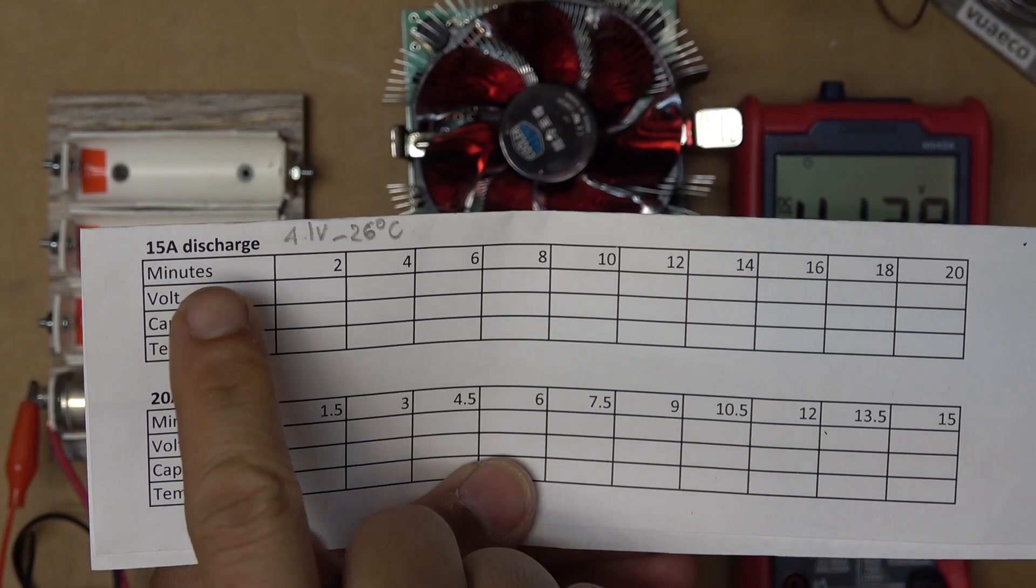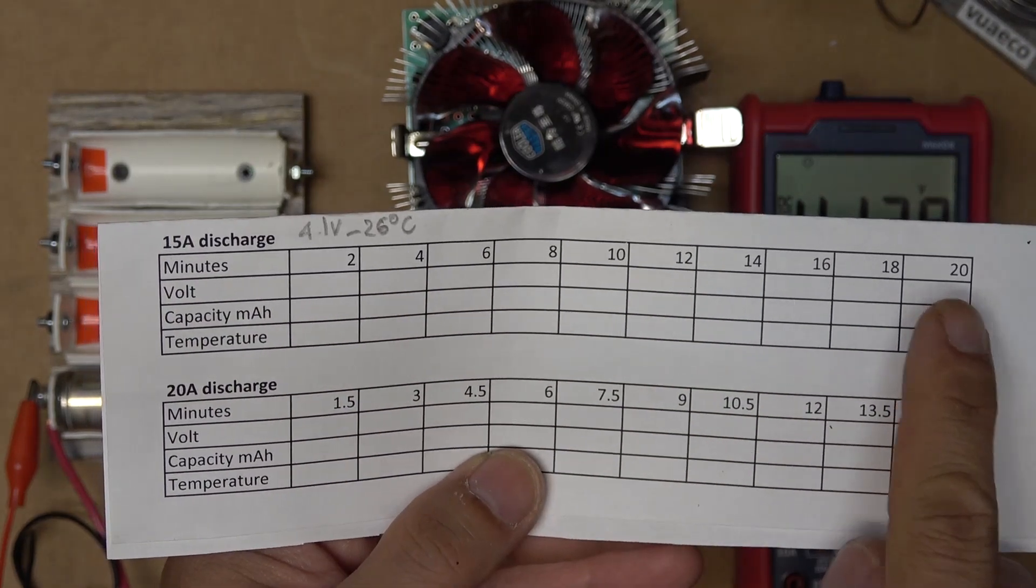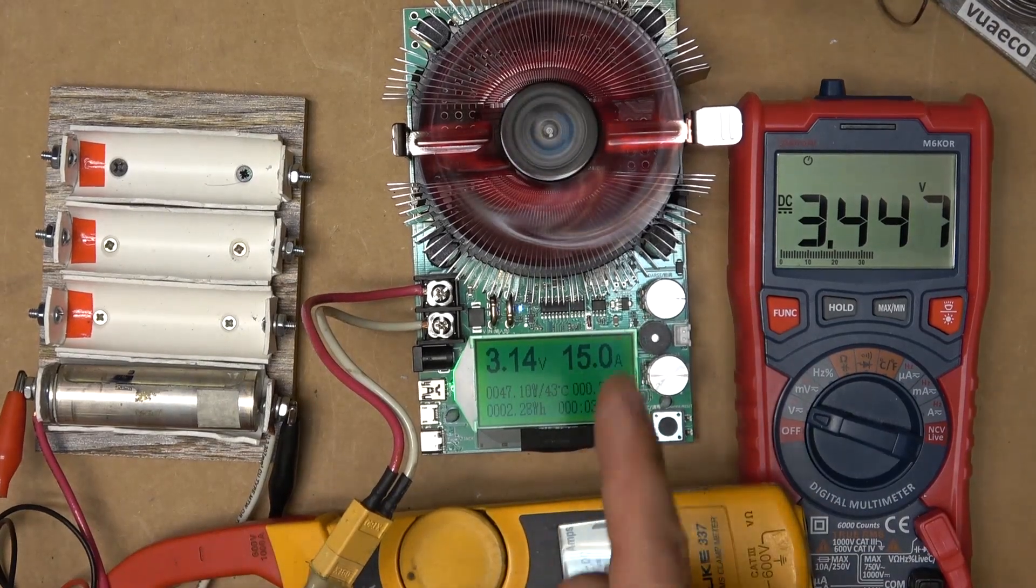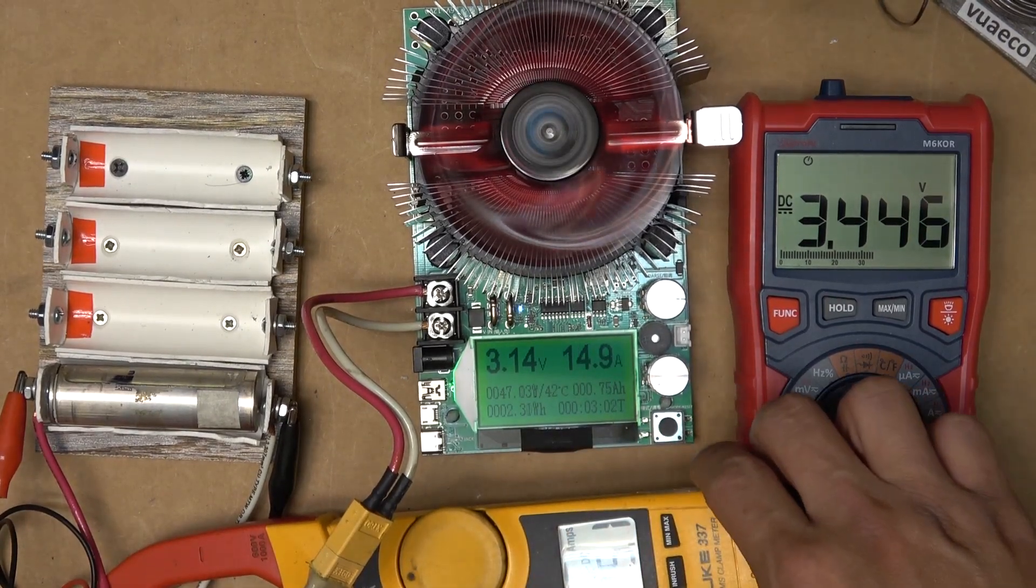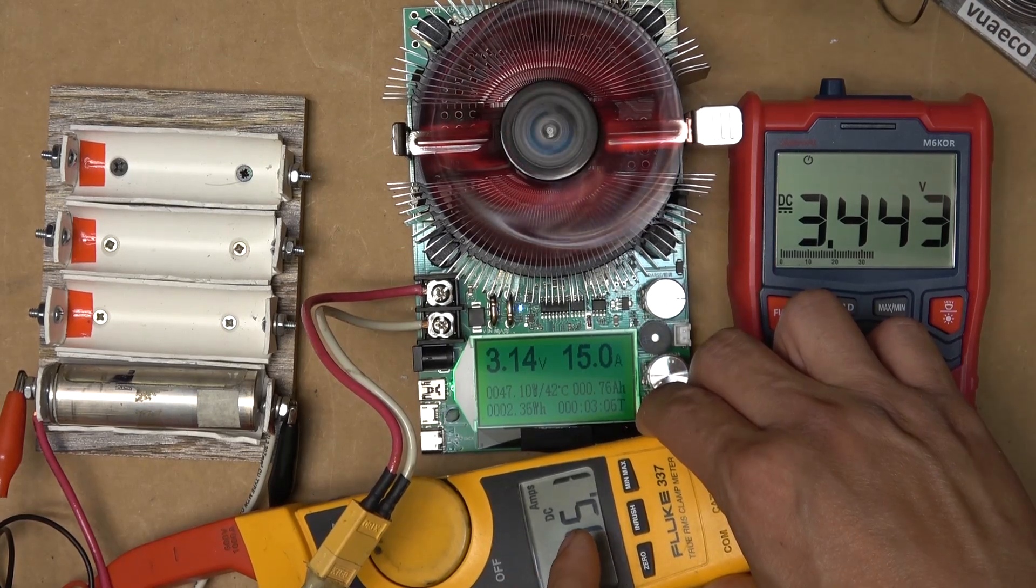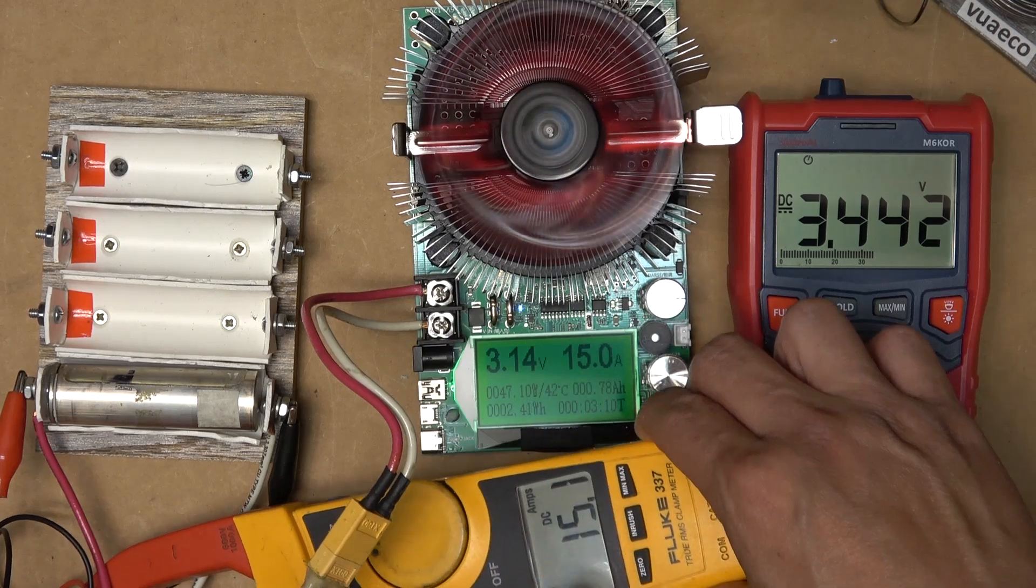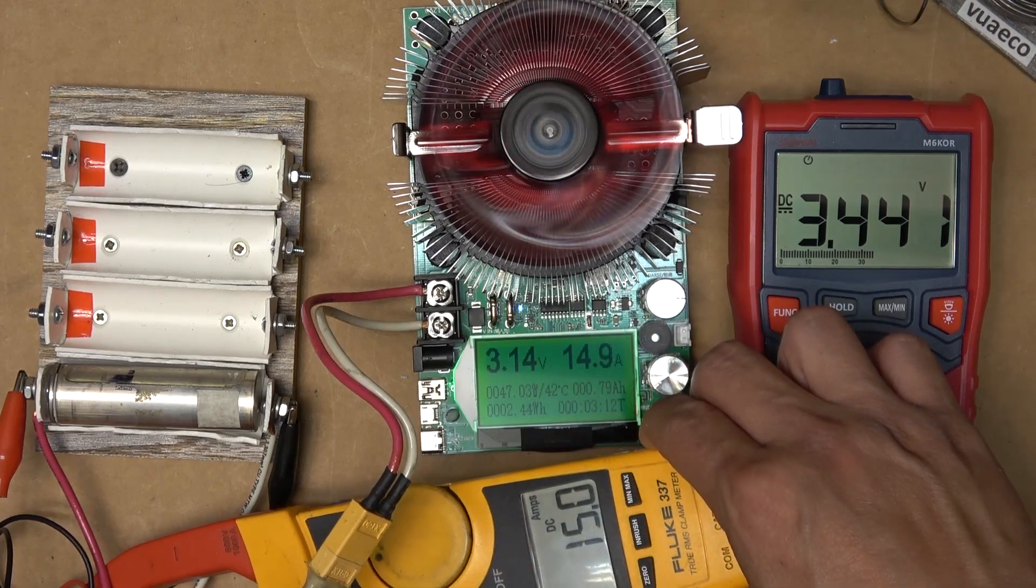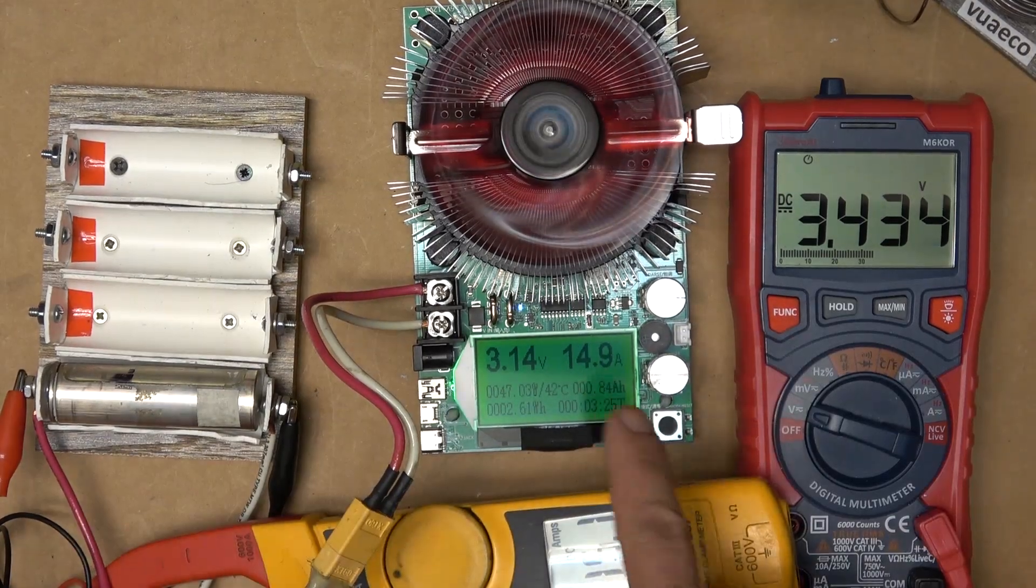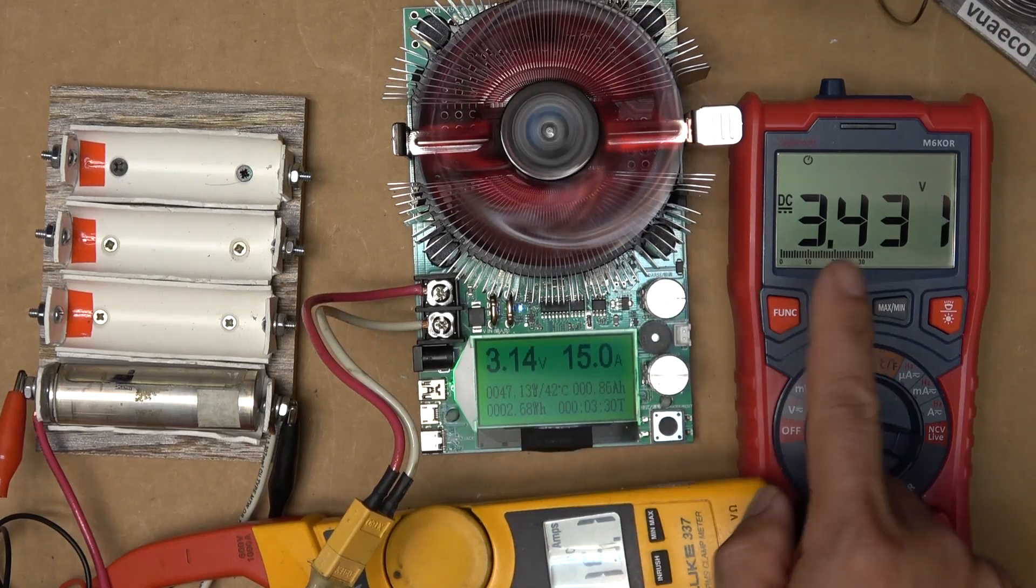Next is 15 amp discharge test. And this is going to last 20 minutes. And we have 15 amps. Let me show you how accurate this tester is. I got my fluke meter here connected. You can see there, it's exactly 15 amps. We got 15 amps on here. So that is pretty accurate for the current. But the voltage is a little bit off. Actually, it's a lot off.